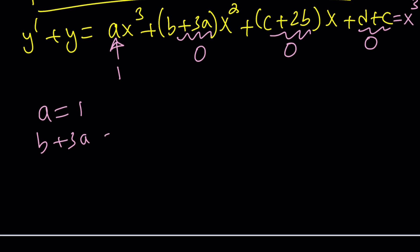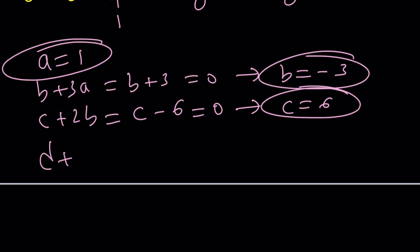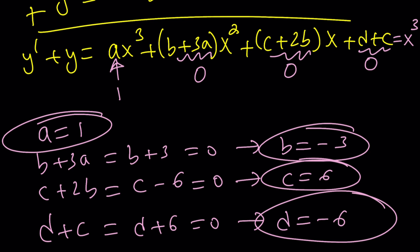a equals 1. b plus 3a, which is b plus 3 equals 0, which means b is equal to negative 3. c plus 2b is equal to c minus 6, because b is equal to negative 3, so c minus 6 is equal to 0, and from here c is equal to 6. Then plug it into the last one. d plus c is equal to d plus 6, which is 0, and then from here d is equal to negative 6. Awesome! We were able to solve for a, b, c, d. So this problem is as easy as a, b, c, d - not just a, b, c, but there are four letters.